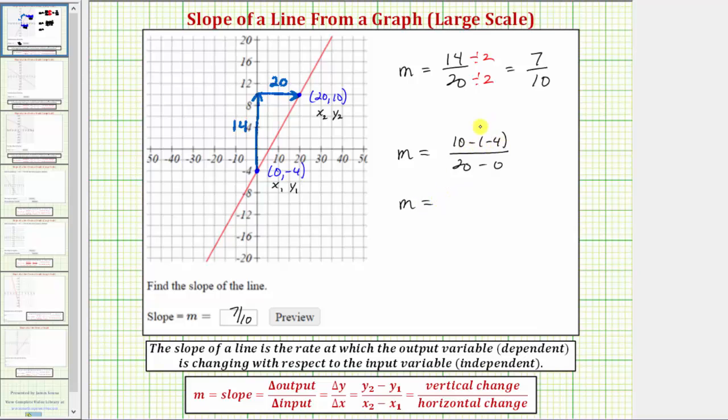So we have 10 minus (-4) becomes 10 plus 4, which is 14. 20 minus 0 is 20. We know this simplifies to 7/10. Again, this tells us that the output increases by 7 each time the input increases by 10.